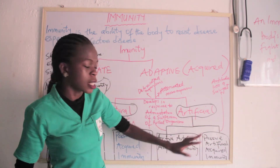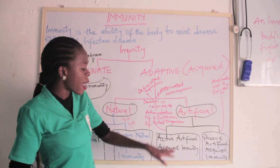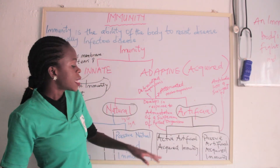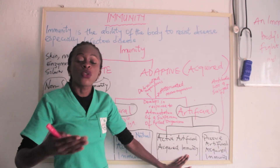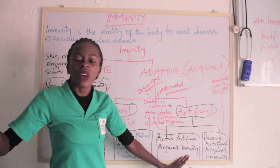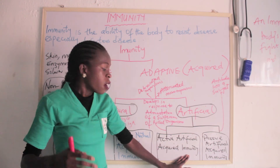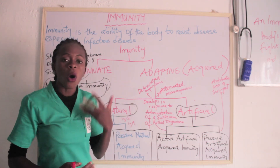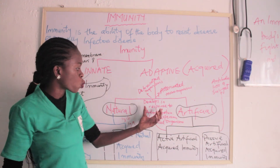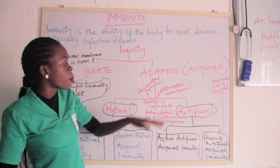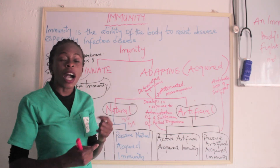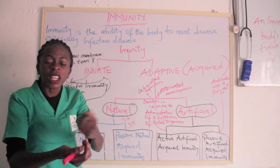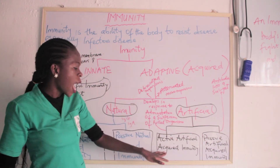Then there is the artificial aspect. We have active artificial acquired immunity and passive artificial acquired immunity. The active artificial acquired immunity includes the vaccines you receive — your polio vaccine, your tetanus vaccine — which make the body resistant to those diseases. These develop in response to administration of killed organisms (such as pertussis), attenuated organisms (such as poliomyelitis), or detoxicated organisms such as tetanus toxoid. All those vaccines you receive as a child are part of active artificial acquired immunity.